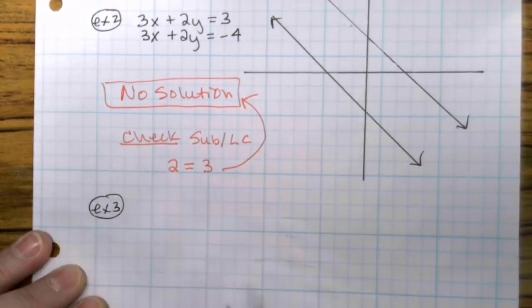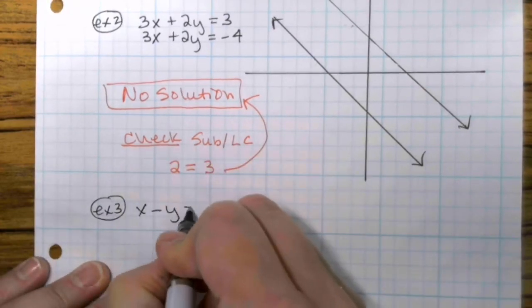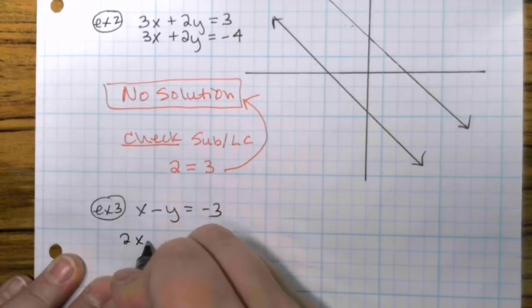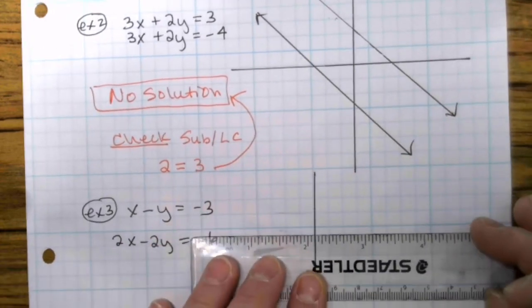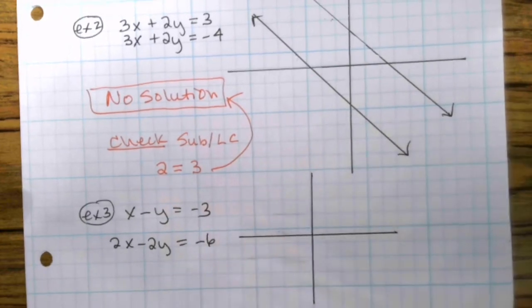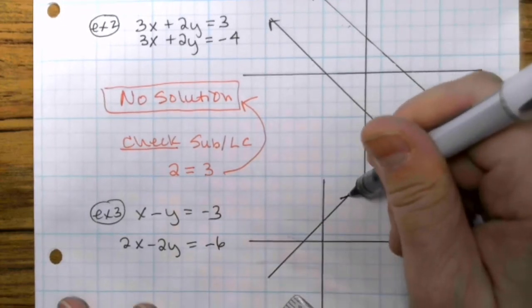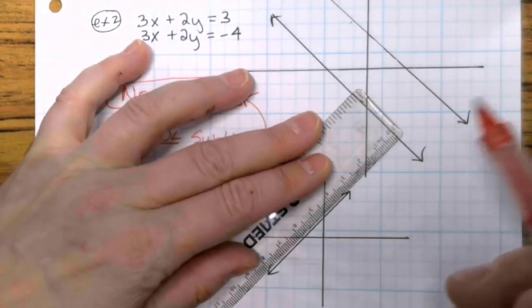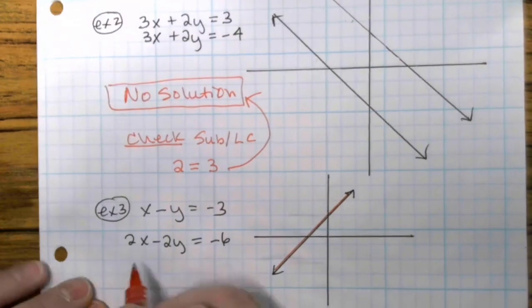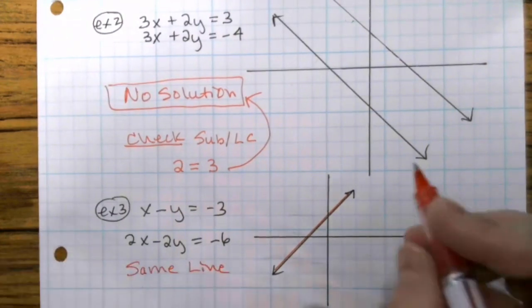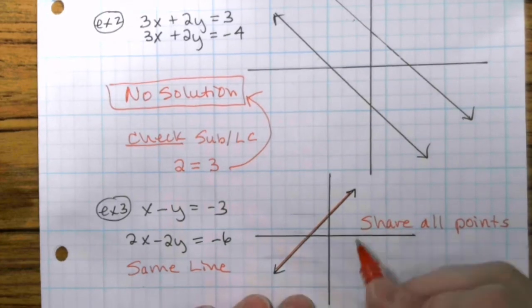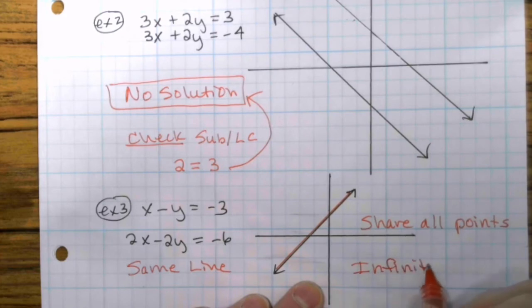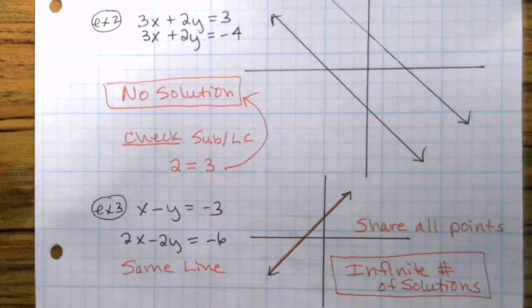All right, and then the last one I want to show you. This is the easiest one. Given the equation x minus y equals negative 3, and 2x minus 2y equals negative 6. If you were to plot these, I'm almost out of space here. What would happen is you would plot the first one, and then when you plotted the second one, it would be the exact same line. So if it's the same line, it means they share all points with each other. Every one of the points that they share is a solution. So for this one, it would be an infinite number of solutions. Because they share all points, so they have infinite solutions. Same line.